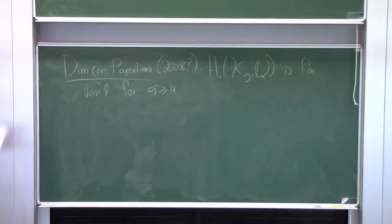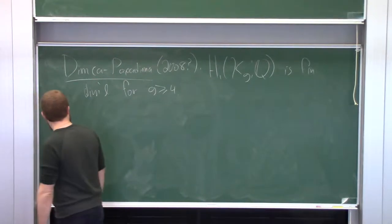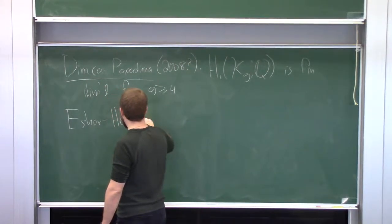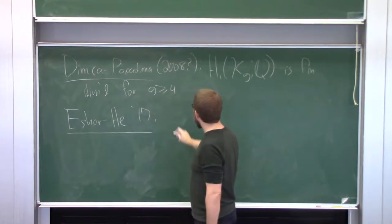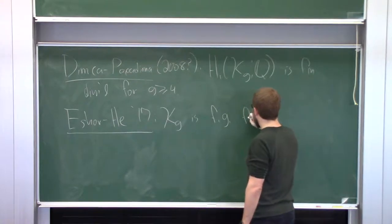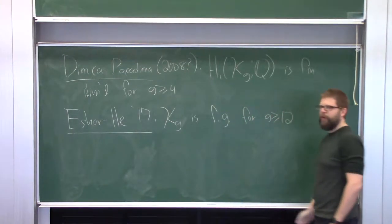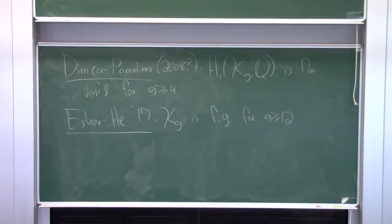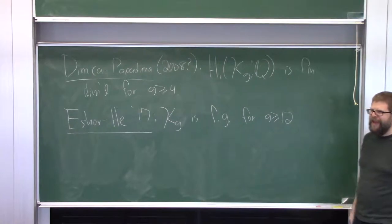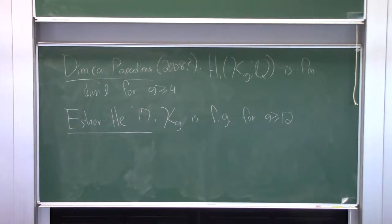There was not a lot of progress for a long time, until a theorem of Ershov-He last year, which showed that K_g is finitely generated for g at least 12. When that paper came out it was an even bigger shock — the proof was very intricate and combinatorial, and somehow it only worked for g at least 12. I don't know any property that a genus-12 surface has that a lower genus surface doesn't. So you might think this is probably not optimal, and that brings me to the main theorem I want to talk about today.